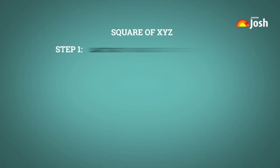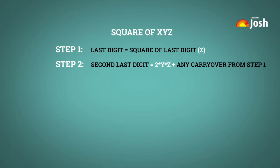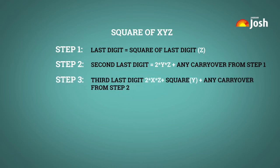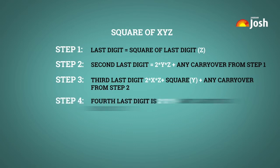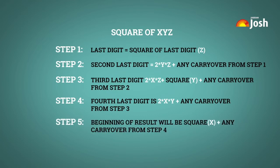Step 1: The last digit is equal to the square of the last digit z. Step 2: The second last digit is equal to 2 × y × z plus any carryover from step 1. Step 3: The third last digit is 2 × x × z plus the square of y plus any carryover from step 2. Step 4: The fourth last digit is 2 × x × y plus any carryover from step 3. Step 5: The beginning of the result will be the square of x plus any carryover from step 4.